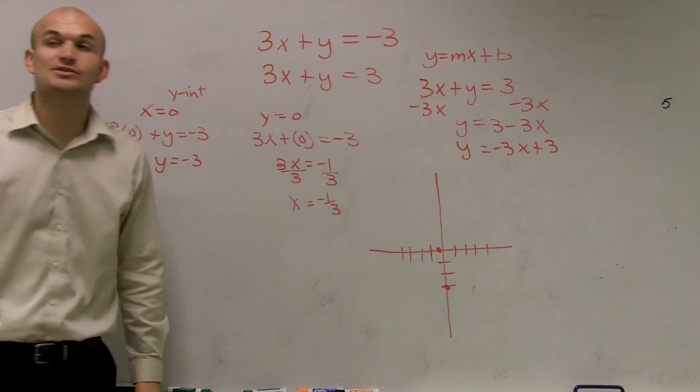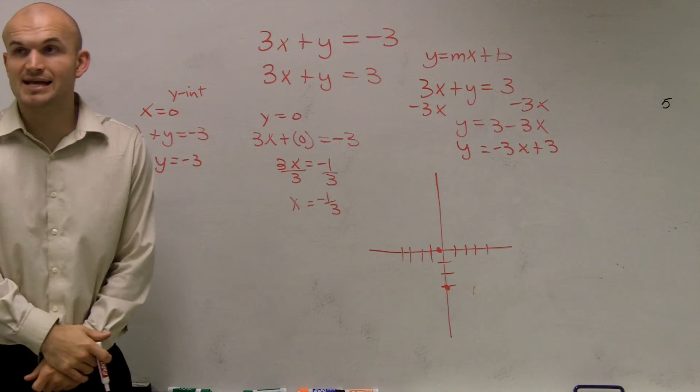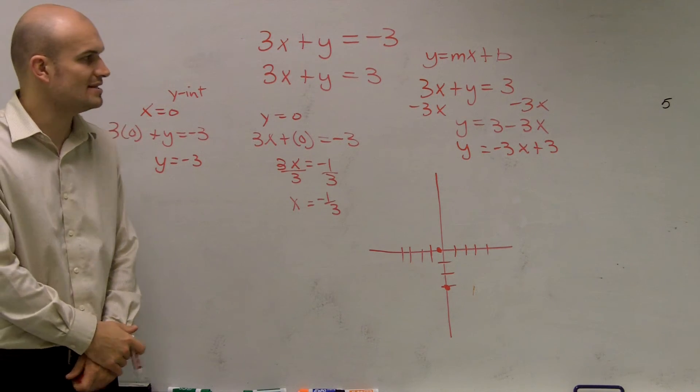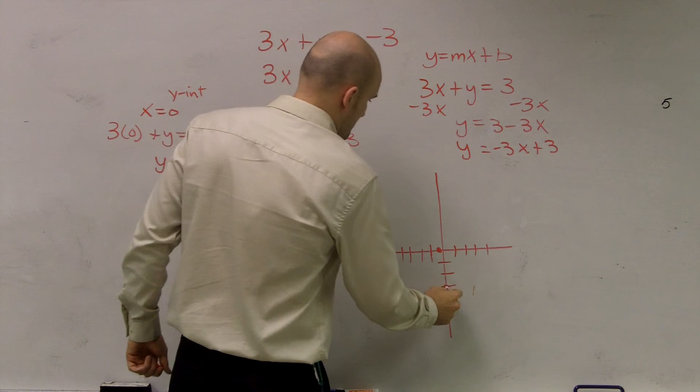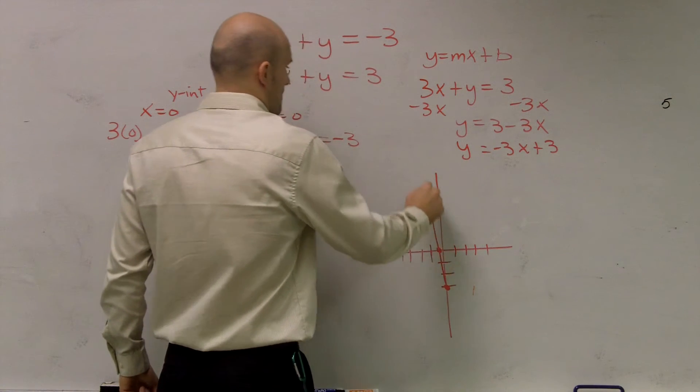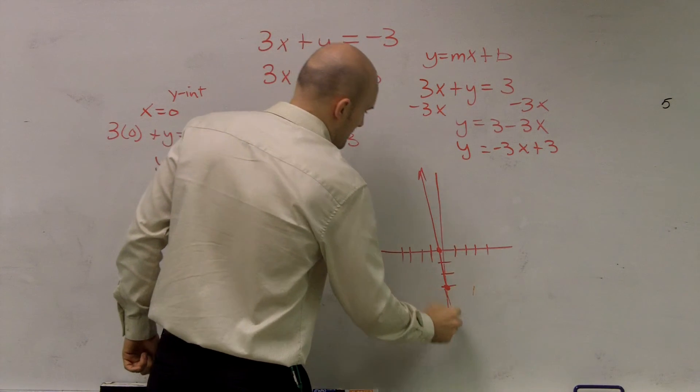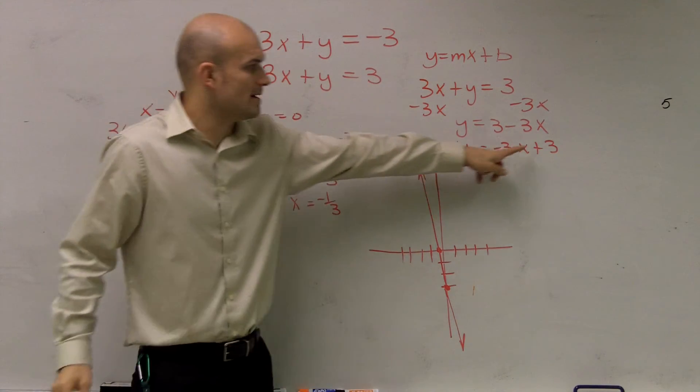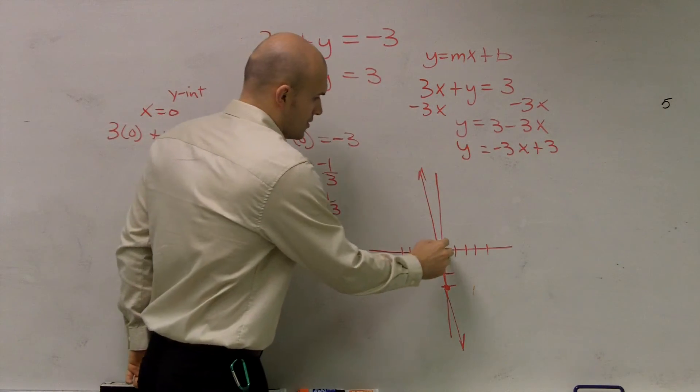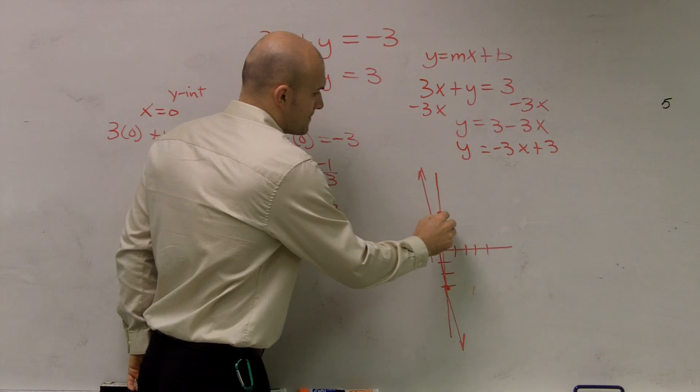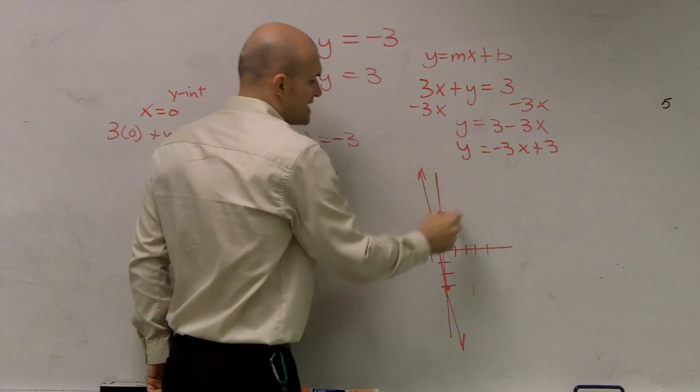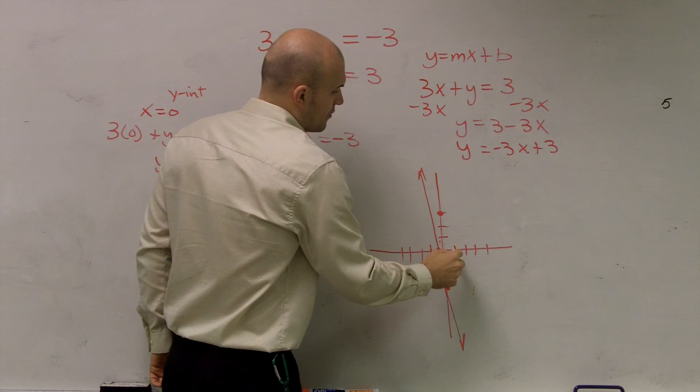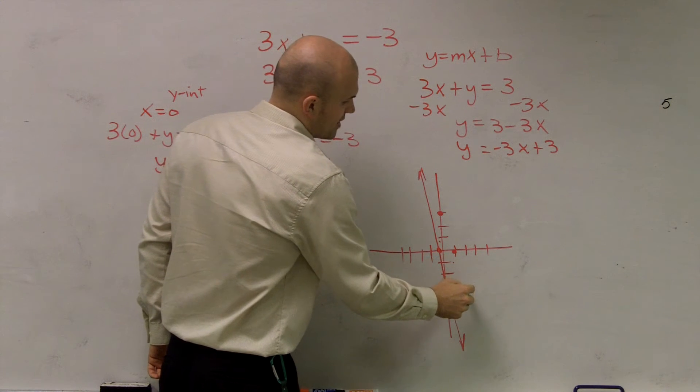Now, what you guys notice is it's in the exact same form. Now you can see that it's in mx plus b form. So now what I'm going to do is I need to graph this. So remember, we go up 3, and then my slope tells me to go down 3 units to the right 1.